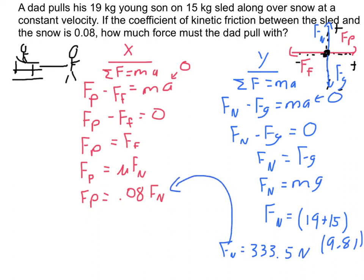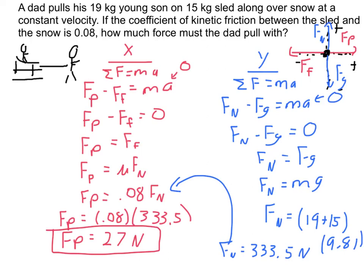Which then gets used here in the x-axis to calculate how hard the dad has to pull. So now FP equals 0.08 times 333.5. And so FP is going to come out to be just a measly, because I have two sig figs, 27 newtons. So, you know, the beauty of the sled, you don't have to pull that hard to keep it in motion.